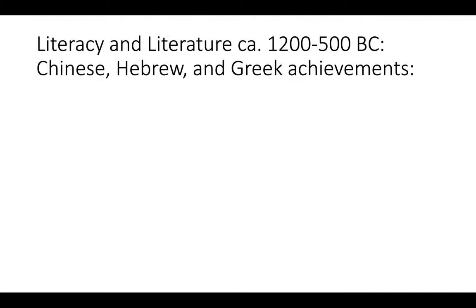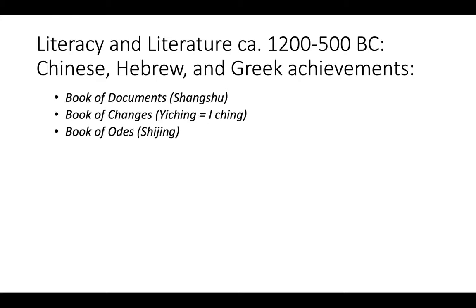This is a slide I used in my first optional lecture, but I'll repeat it here. It demonstrates that around the same 700-year period, there were simultaneous achievements in literacy and culture among ancient China, the ancient Near East through the Hebrew group, and ancient Greece. In China, all of these very foundational texts were produced and perfected — the Book of Documents, the Book of Changes, and the Book of Odes. We'll be focusing on the Book of Odes today.